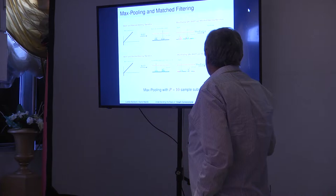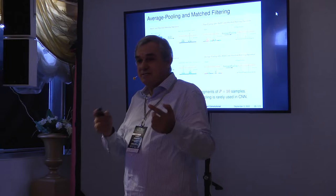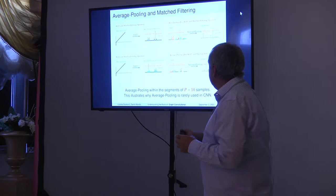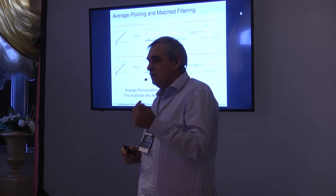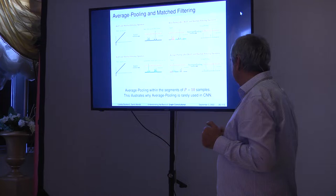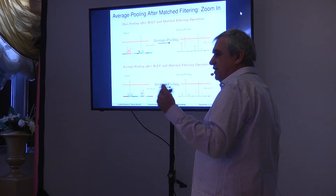Max pooling keeps the maximum, but average pooling does not — so it is very rarely used in convolutional neural networks because it can destroy the maximum. If we calculate the average of 10 samples using average pooling, we are not sure we will not lose the information about the maximum. Average pooling is rarely used, just to show that the match filtering approach explains more about why something is used and why something is not used.